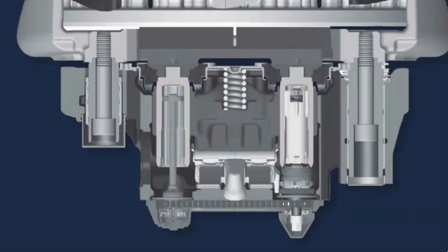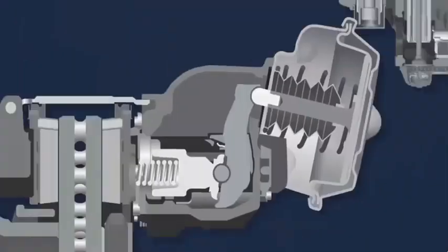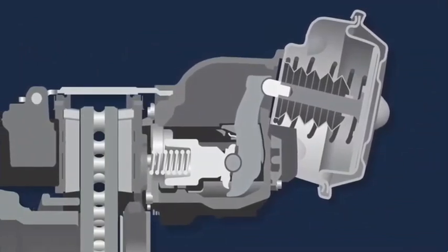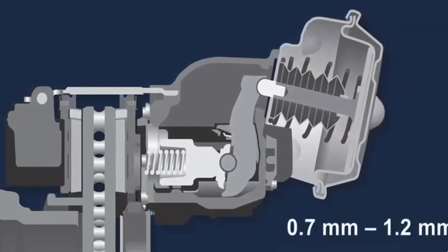The two threaded tubes lead to the tappet and boot assembly. The tappet pushes the caliper the distance to make up for the pad wear of each brake application. Every time the brake is actuated, the adjuster turns the threaded tube by the amount necessary to maintain a clearance between 0.7 and 1.2 millimeters between the brake pad and rotor.